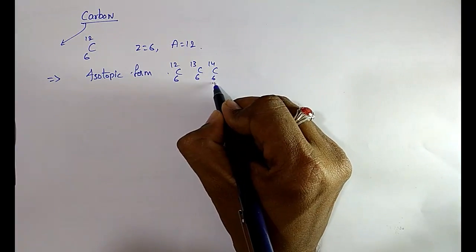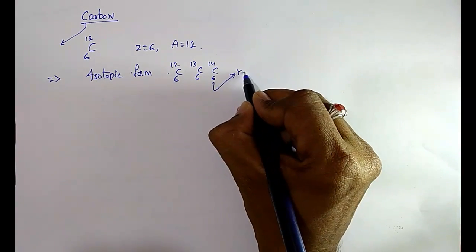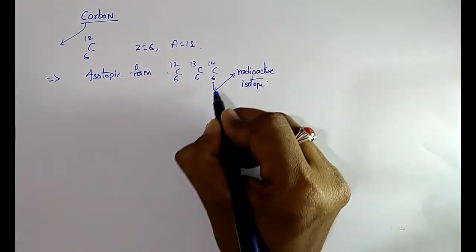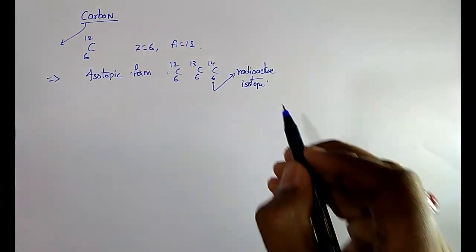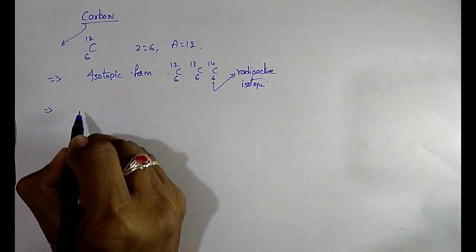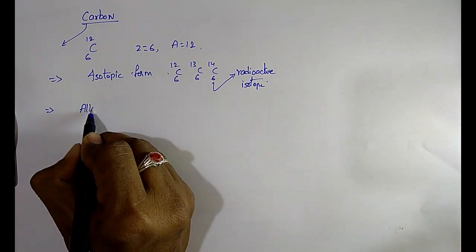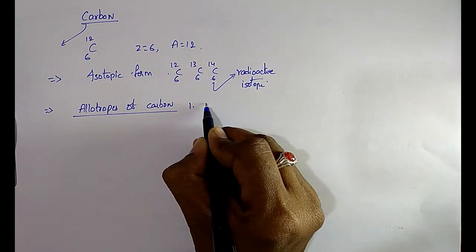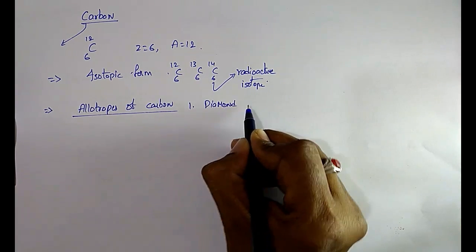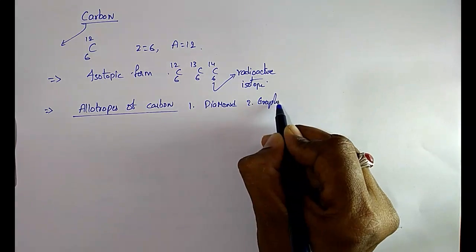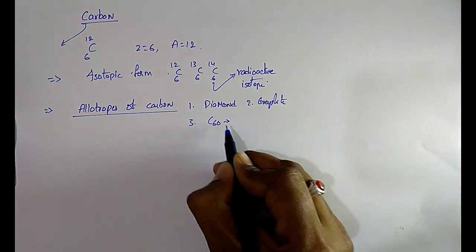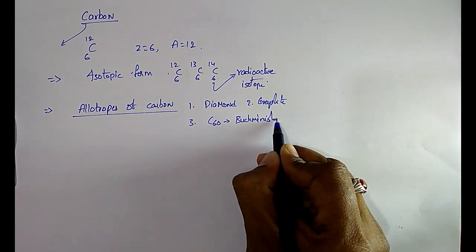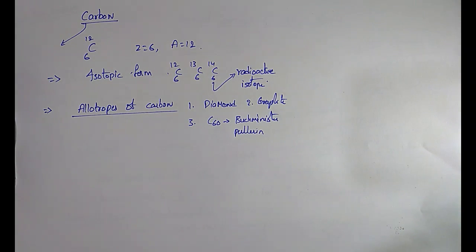Among carbon's isotopes, C-14 is a radioactive isotope — very important. The allotropes of carbon are: first, diamond; second, graphite; and third, C60, also called Buckminster fullerene.